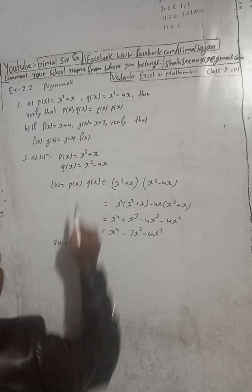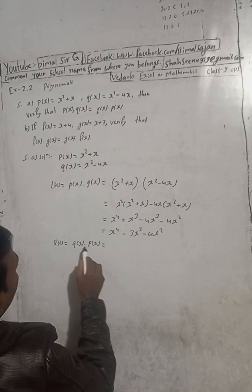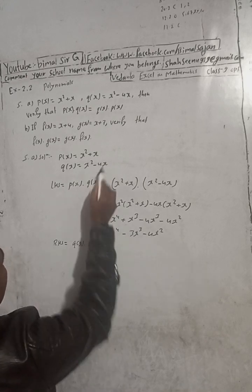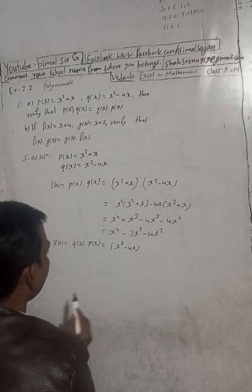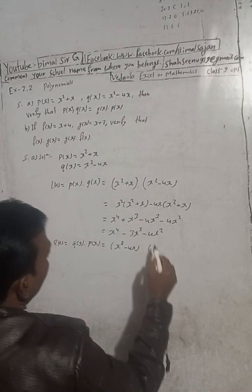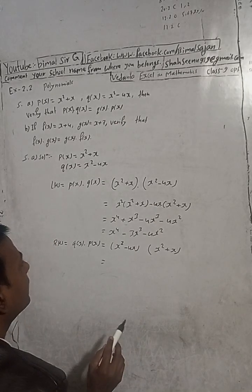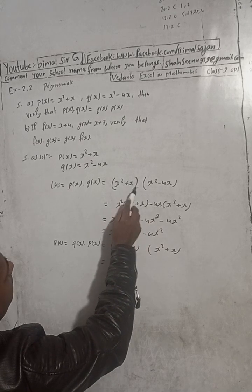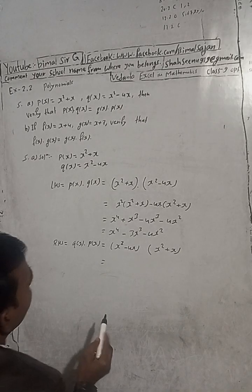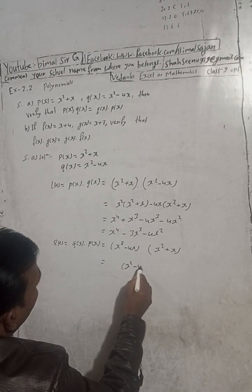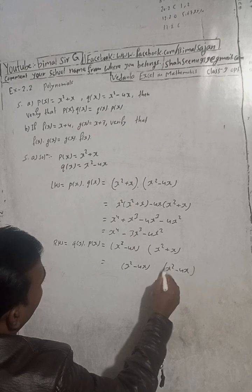Now for the RHS: RHS is Q(x) into P(x). So write Q(x) which is x² - 4x, and P(x) which is x² + x. Write x² - 4x the first time, give some space, and x² - 4x the second time.